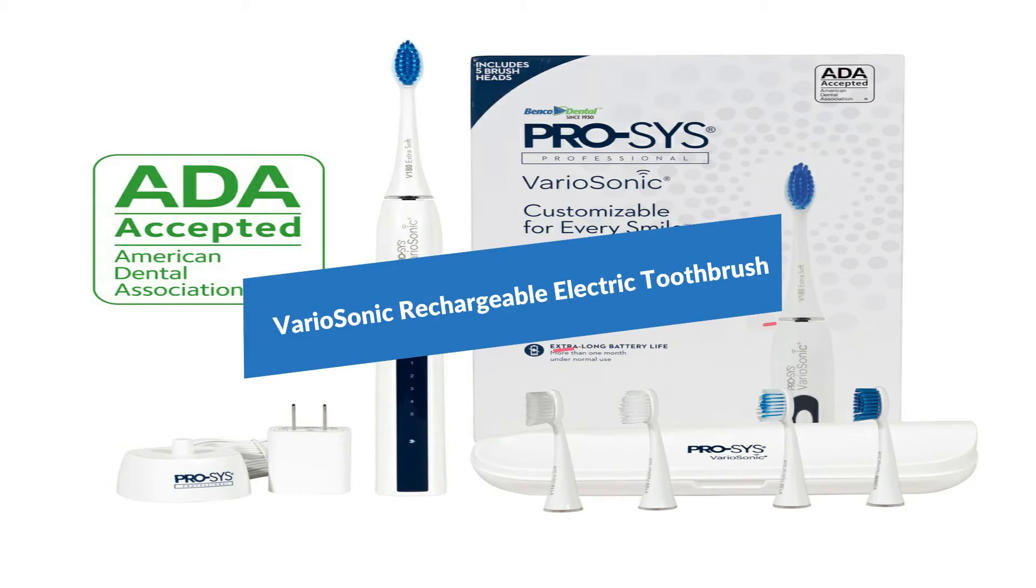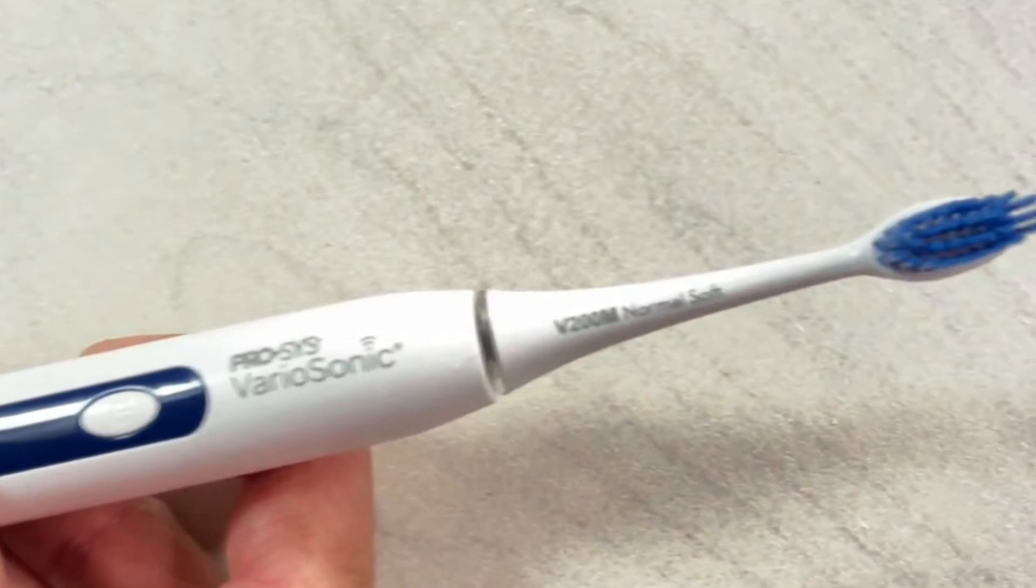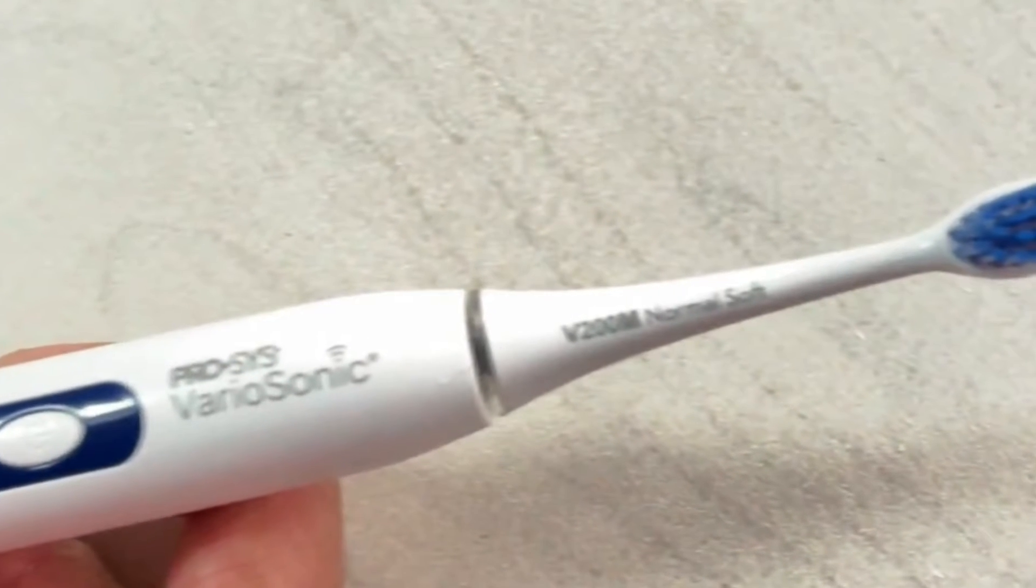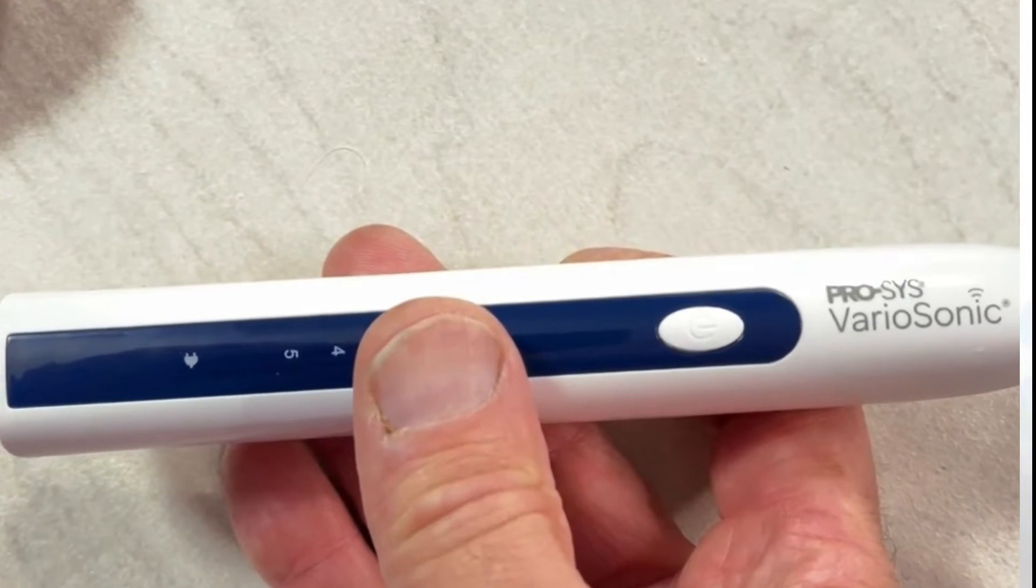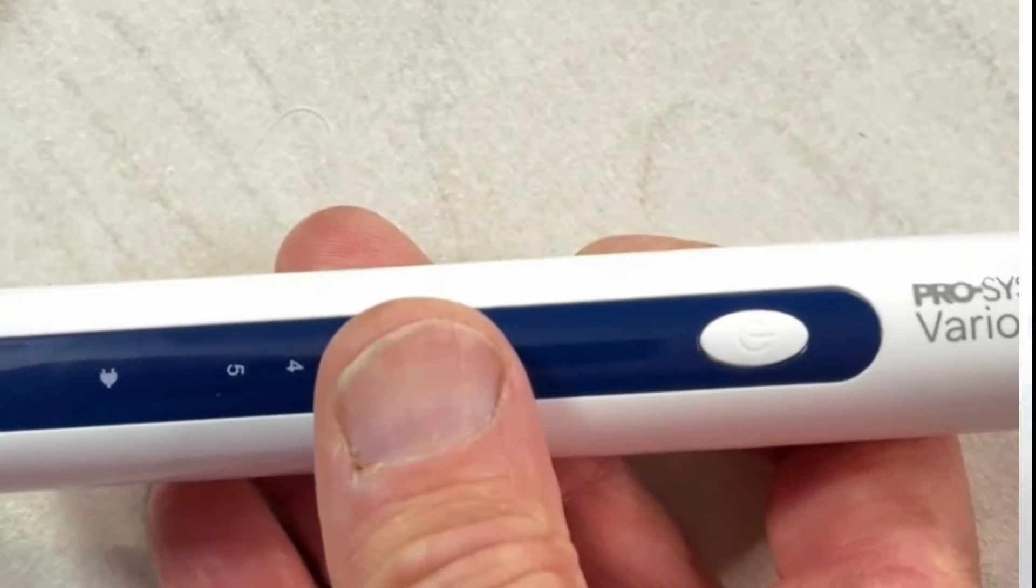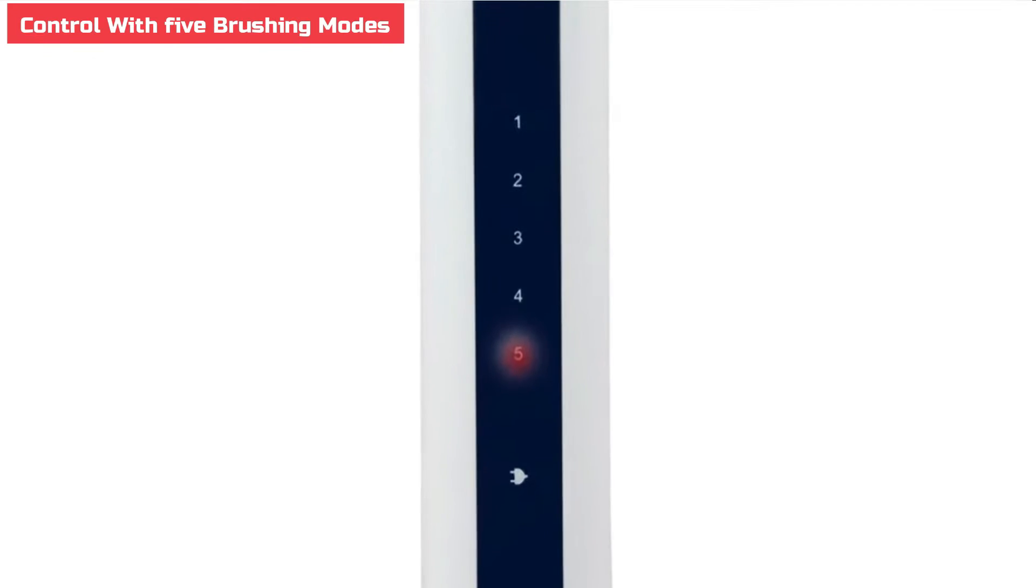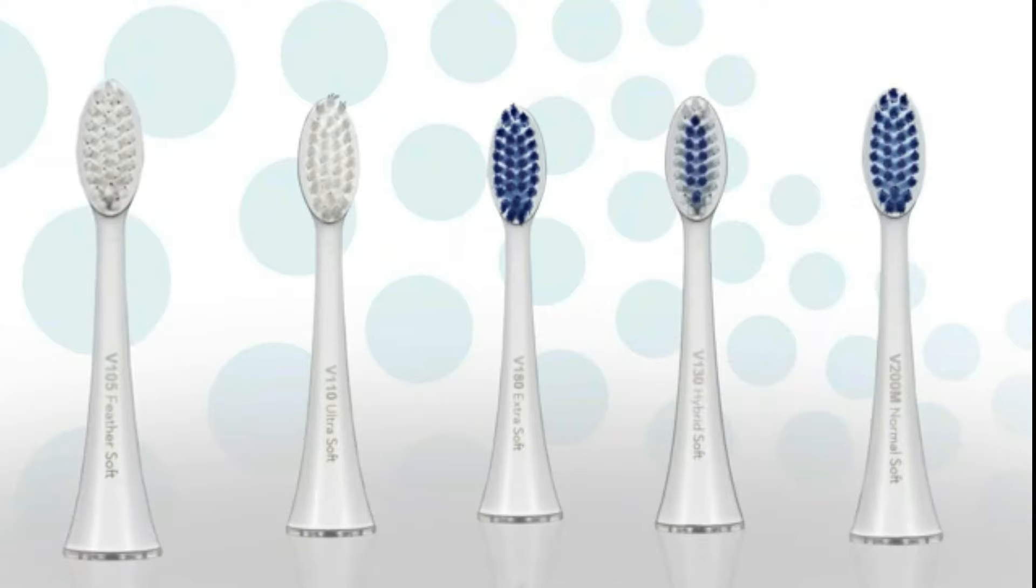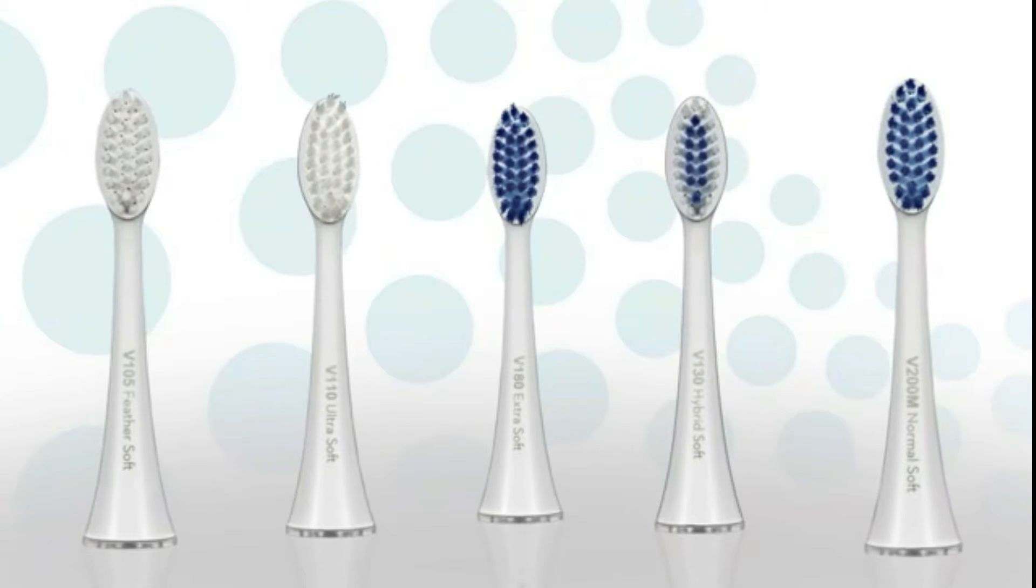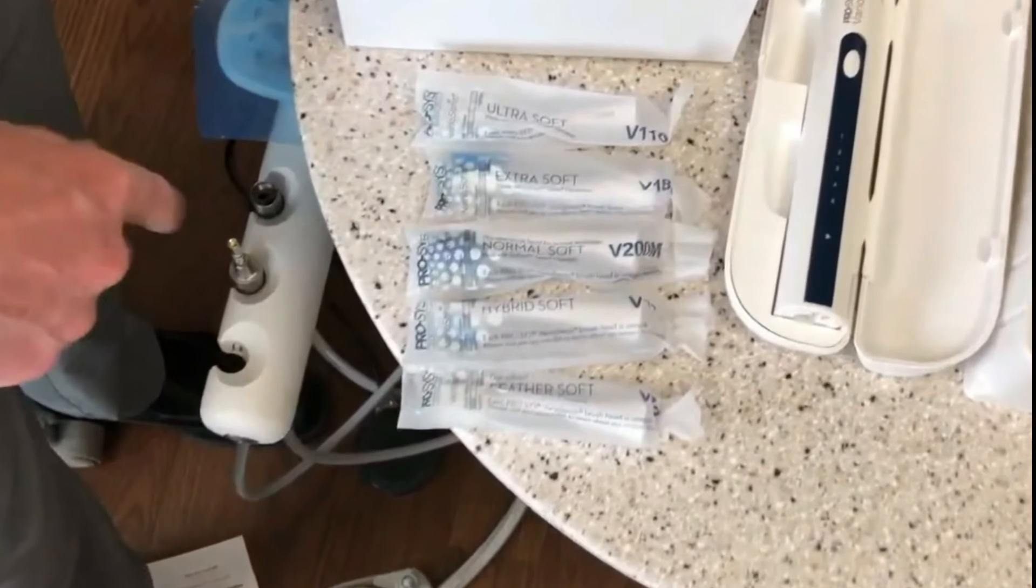Let's start with the VarioSonic Rechargeable Electric Toothbrush. The ProSys VarioSonic Electric Toothbrush helps you customize your brushing experience at home to get a dentist-like clean. This toothbrush is designed for comfort and control, with five brushing modes and five different precision brush heads, offering up to 25 unique methods to care for your dental hygiene. It enables customization for your specific dental care requirements.